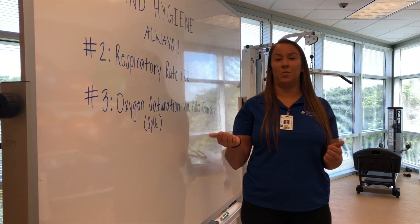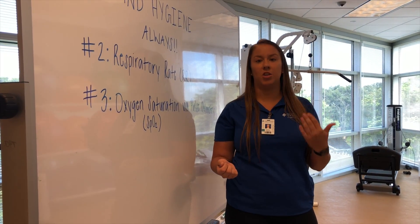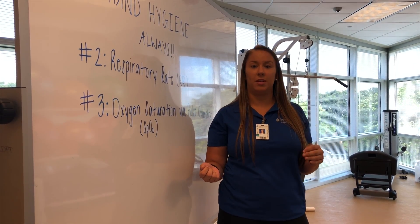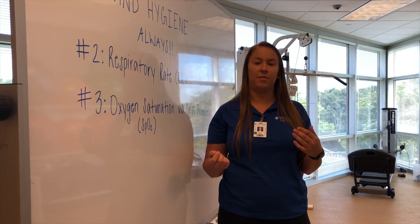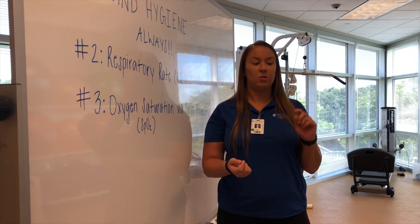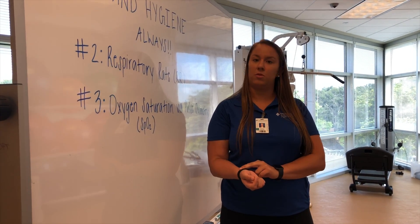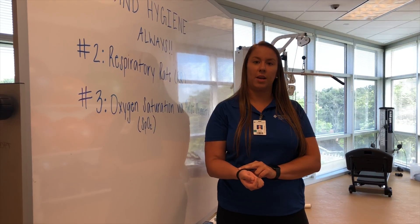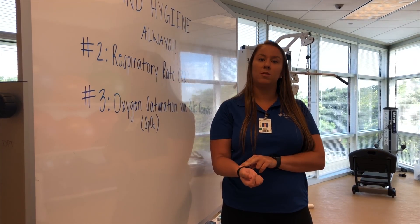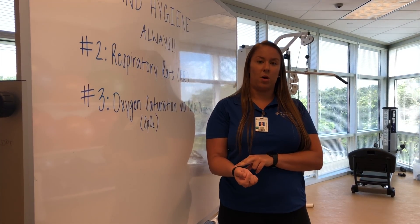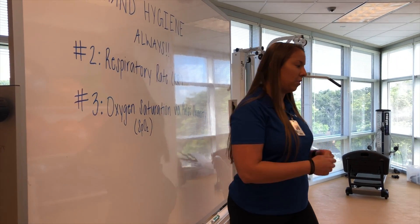So now we're going to actually assess respiratory rate. When doing that, I don't want to tell the patient I'm watching their breathing because they could alter their breathing pattern if they know. So I'm going to go up to the patient and ask if I can check the pulse on her arm, and while I'm doing that, I'm actually going to be watching her breathing pattern.